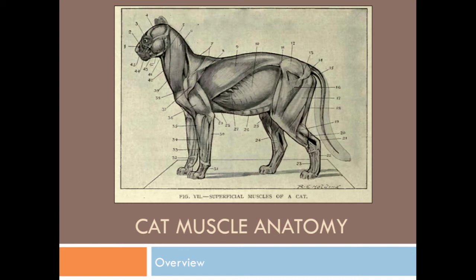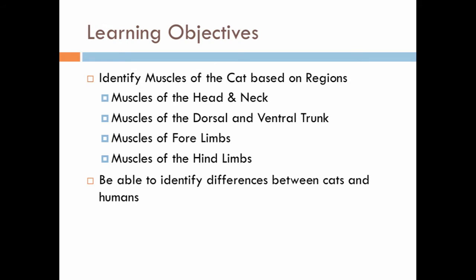Hello, today we'll be going over cat muscle anatomy. Our learning objectives for today are to identify muscles of the cat based on regions: muscles of the head and neck, the dorsal and ventral trunk, muscles of the forelimbs, and muscles of the hind limbs, then be able to identify the difference between cats and humans.